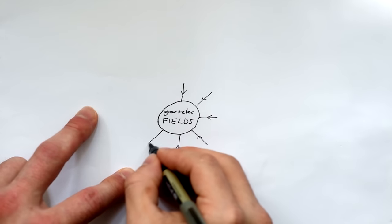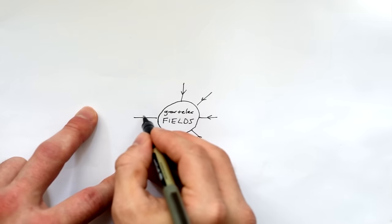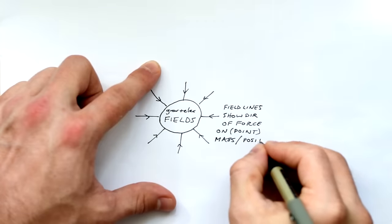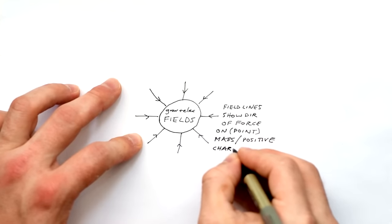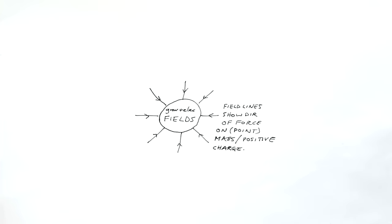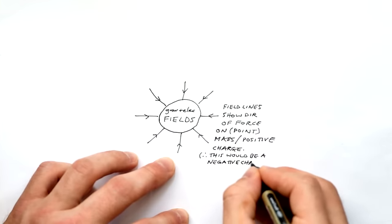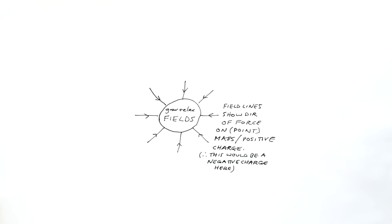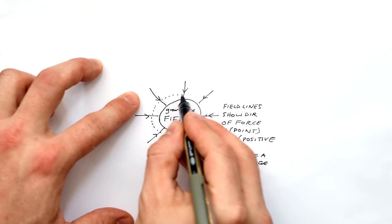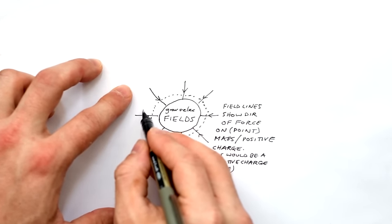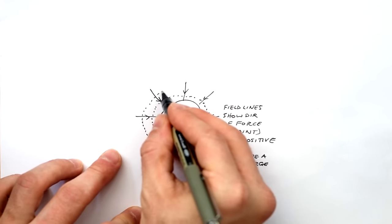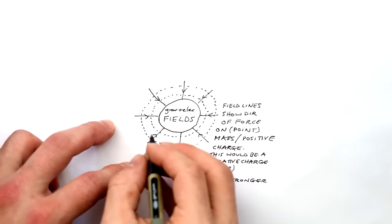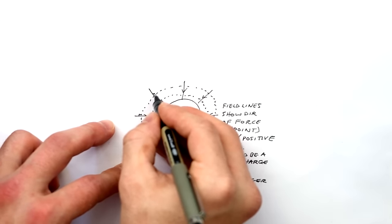A field is a part of space where there are invisible forces at work. We represent these with field lines, which show the direction of force on a point mass for a gravitational field or a positive test charge for electric fields. For a radial field — like a planet or negative charge in the middle — the field gets stronger closer in because the field lines are closer together. If it was a positive charge, the lines would go away. Equipotentials and field lines always cross perpendicular to each other.